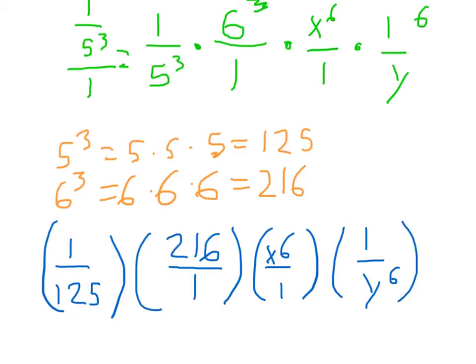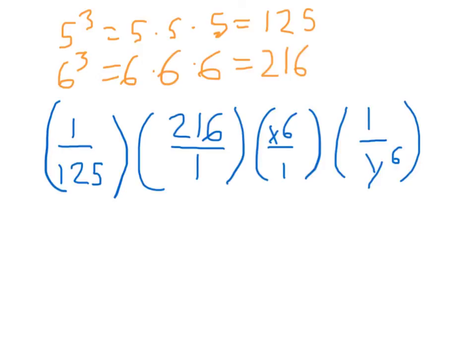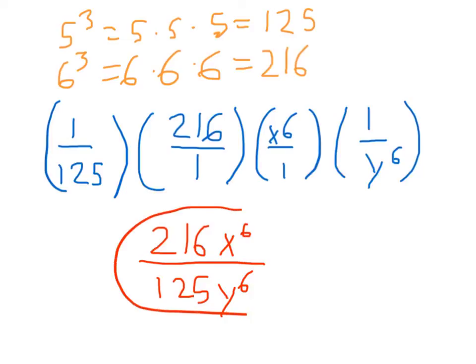Now we can multiply out all these fractions to get our final answer. So on the top, we have 1 times 216 times x to the 6th times 1, so that's going to give us 216 x to the 6th. On the bottom, we have 125 times 1 times 1 times y to the 6th, so that gives us 125 y to the 6th. And this fraction cannot be simplified anymore. So that's your final answer.